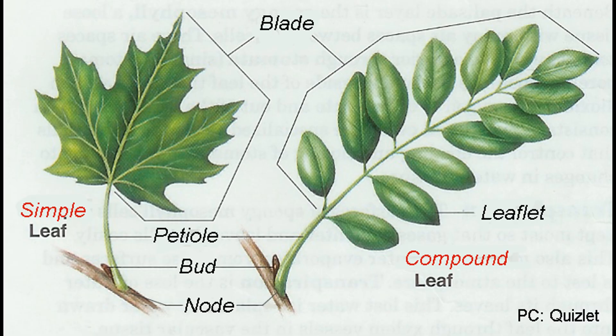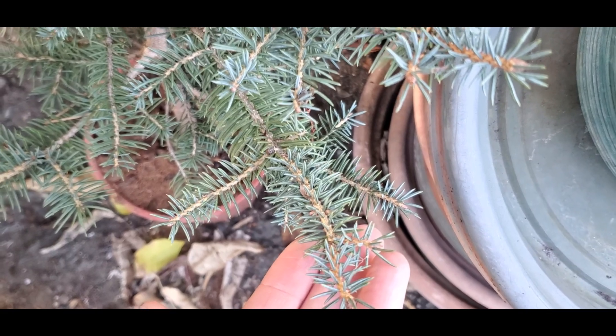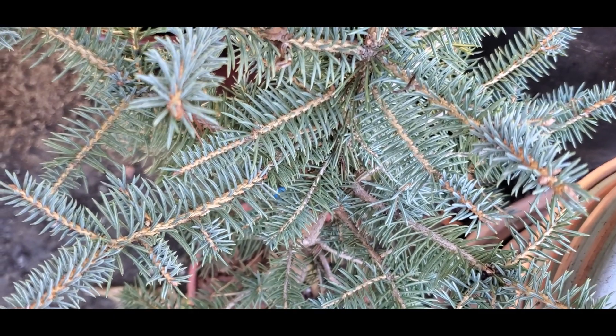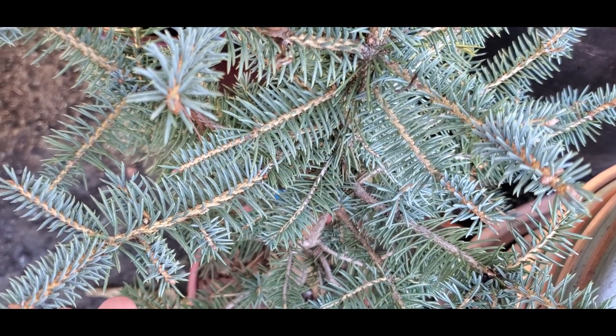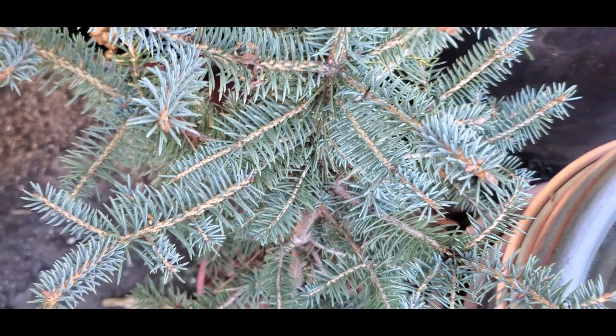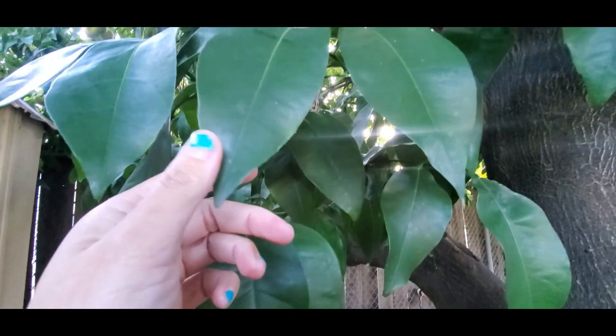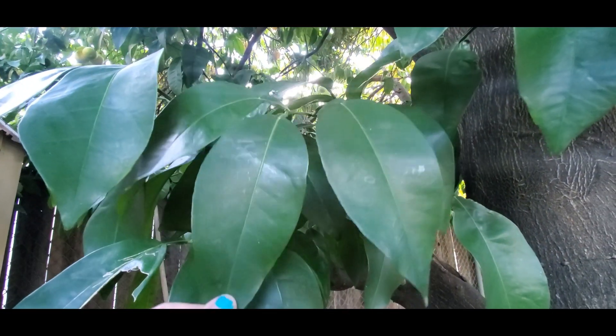For the purposes of this video, I'm assuming that you know how to distinguish a simple leaf versus a compound leaf — I have another video discussing this. Foliage generally just refers to the leaves, the needles, the photosynthetic organs that help the tree make energy and make sugars.